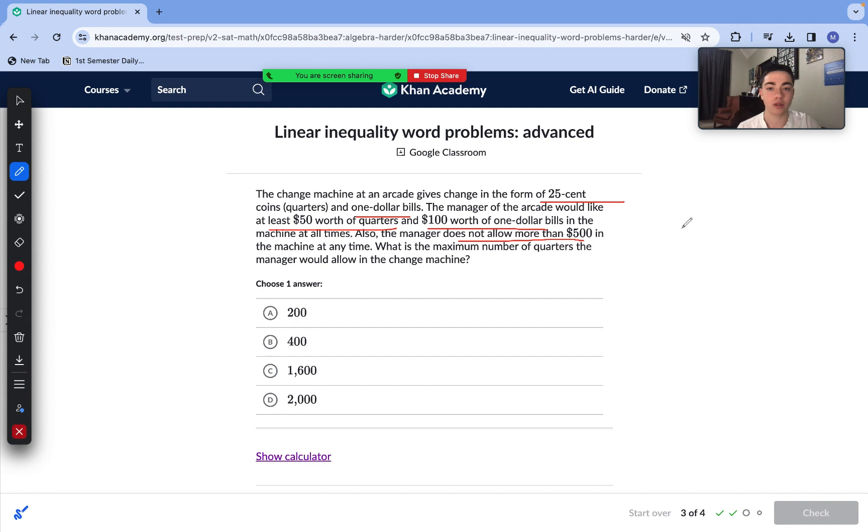So we need at least $100 worth of the $1 bills and we need at least $50 worth of quarters. But we're going to be having as many quarters as possible until we reach that $500. Once we subtract the $100, our quarters need to be less than or equal to $400 worth of quarters. And of course a quarter is 0.25 of a dollar. So where Q represents the number of quarters, in order to find how many quarters we need we divide by 0.25 on each side. When we divide by 1 fourth we just multiply by 4. So it's 400 times 4. The maximum number of quarters the manager would allow in the change machine is 1600.